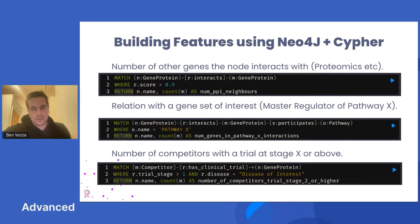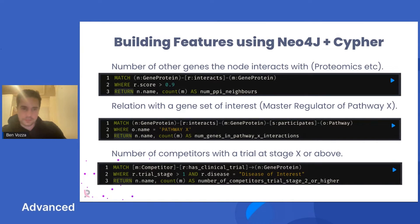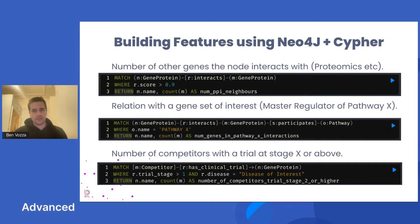Jumping right into how you can build graph-based features using Neo4j and the query language Cypher. Looking at this first example: if you're a scientist looking at a potential gene as a druggable target, you want to understand — if I drug this target, what other genes are going to be affected downstream? Understanding the number of neighbors of that gene is really important, and you may want to minimize or maximize the number of potential downstream effects of the gene you're targeting.